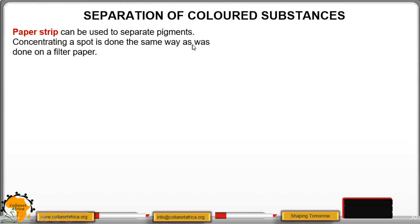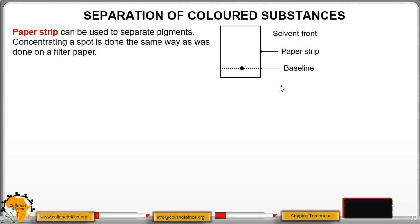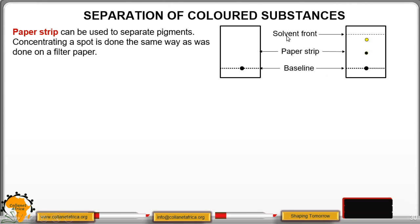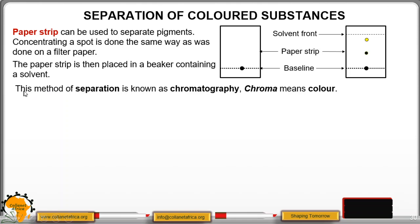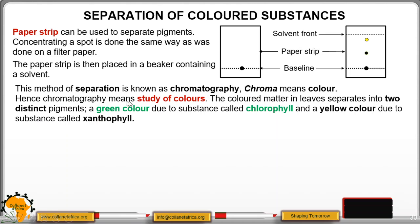Constructing a spot is done the same way as on a filter paper. We have the paper strip with our concentrated spot here, the filter paper, and this is the baseline. We have the solvent front. The paper strip is then placed on a beaker containing the solvent. This method of separation is known as chromatography, where chroma means color. Hence, chromatography means study of colors.